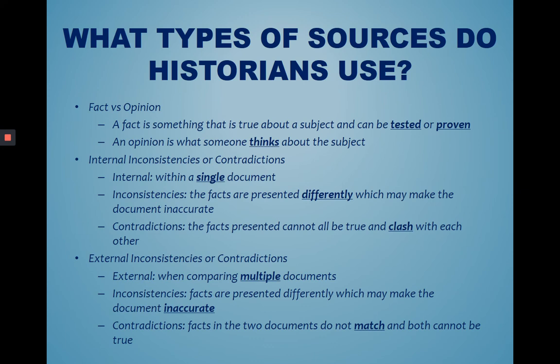External inconsistencies or contradictions — external means when you're comparing multiple documents. You might be reading letters from multiple soldiers to study the American Revolution. If the facts don't all line up between those documents, you might have some inconsistent or false information. Inconsistency means facts are presented differently, which may make the document inaccurate. For example, in one letter someone might talk about staying at Valley Forge in the summer, but then in another letter they talk about staying at Valley Forge in the winter. Those would be inconsistent with each other and can cause confusion when we study the past.